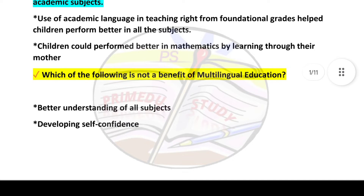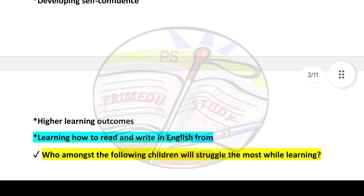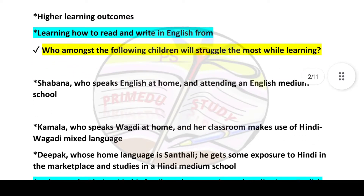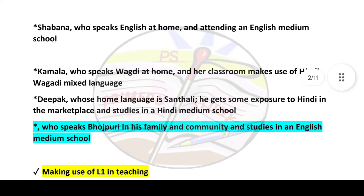Fourth question: Which of the following is not a benefit of multilingual education? Answer is option number four: learning how to read and write in English. Next question: Who amongst the following children will struggle the most while learning? Answer is option number four: a child who speaks Bhojpuri at home and studies in an English medium school.